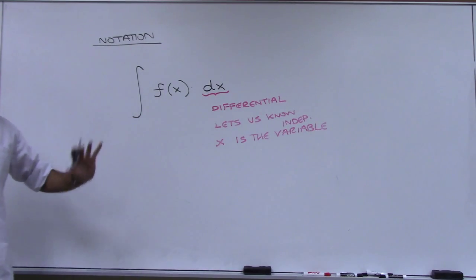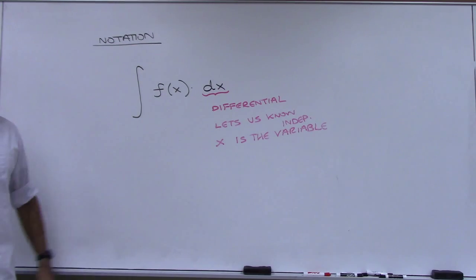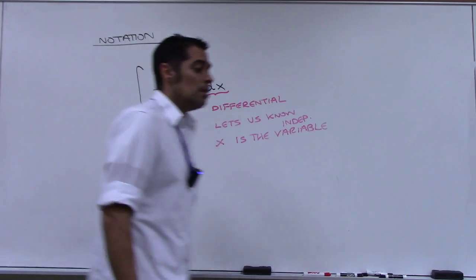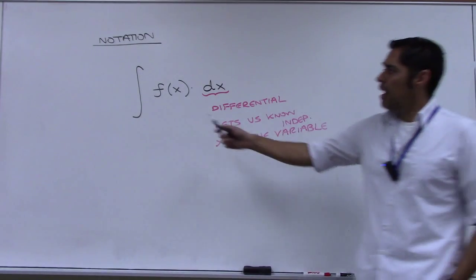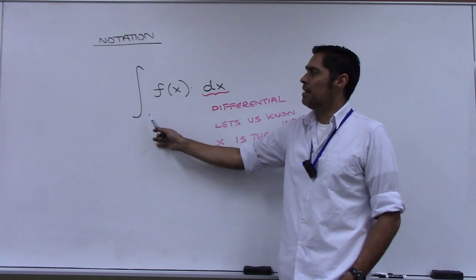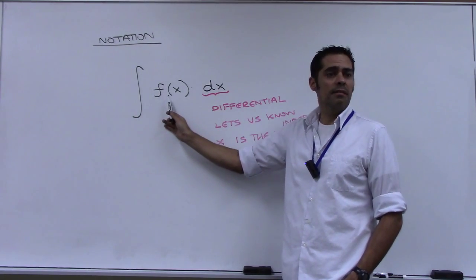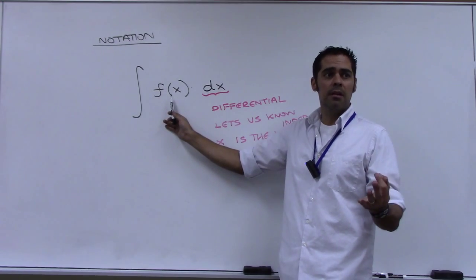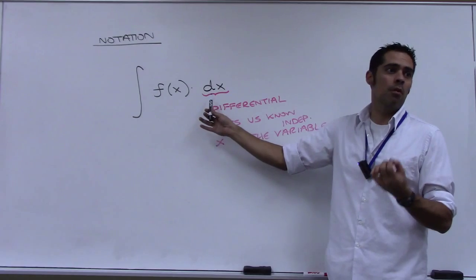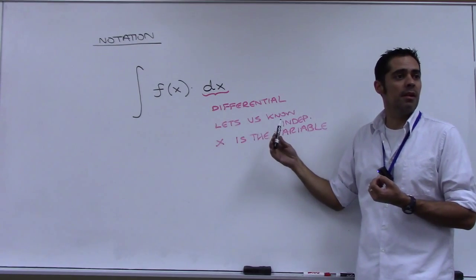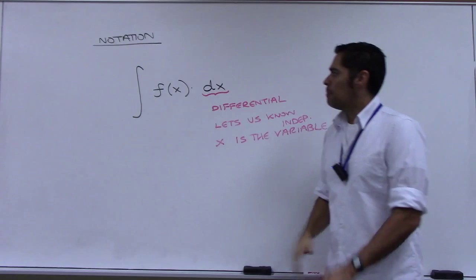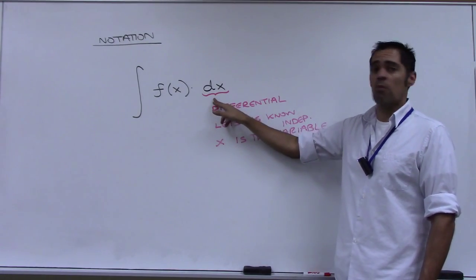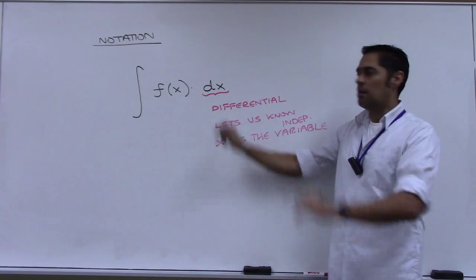You could have this symbol finding the anti-derivative of a function that depends on more than just x — it could be a function of two or three variables, and you would need to know which one you're treating as the independent variable. That would be Cal-3. But dx is going to play a more important role than just being a placeholder, as we'll see today.